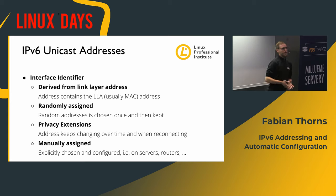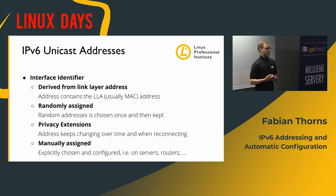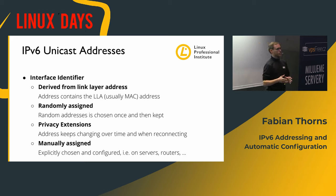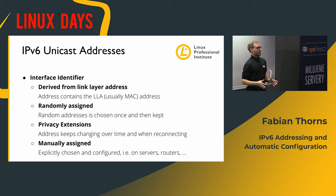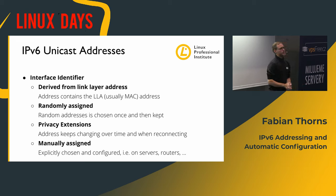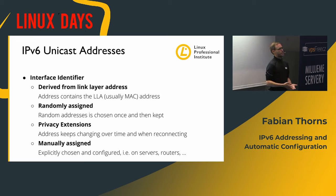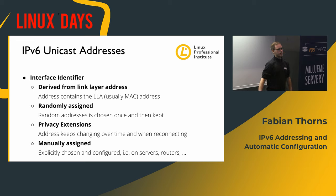If you want to prevent that, there's something called privacy extensions. They randomize the interface identifier, and they do it pretty frequently. Whenever you connect to a new network, and even when a certain time passes, you get a new interface identifier. There's always a transition period in which you still have the old identifier and the new one, so that gives you two sets of addresses - and that's how the number of IPv6 addresses on the same device can increase very fast. There's also the way to randomly assign static interface identifiers, which a lot of Windows servers do - determining a random identifier once and keeping it forever, so you can put it in DNS.